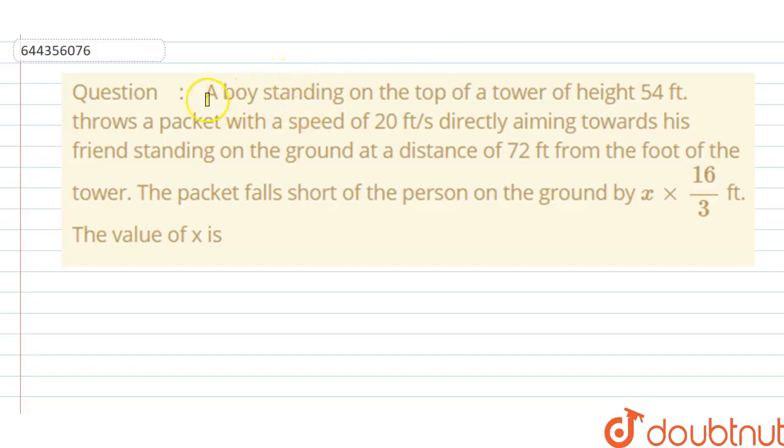A boy standing on the top of a tower of height 54 feet throws a packet with a speed of 20 feet per second directly aiming towards his friend standing on the ground at a distance of 72 feet from